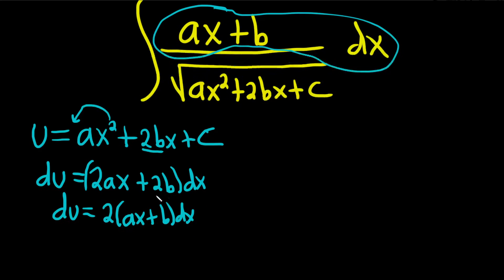So we just have to get rid of the 2 because there's no 2 in our integrand. So what we do is we divide both sides by 2 like this. Divide by 2 and that gives us, I'm going to do it over here, 1 half du equals parentheses ax plus b dx.